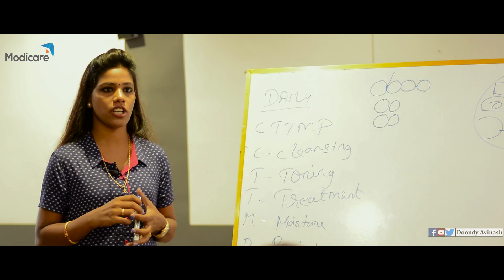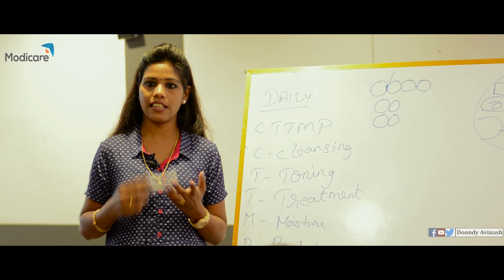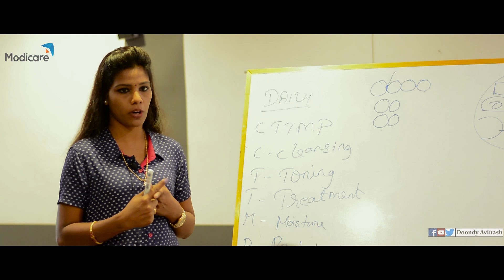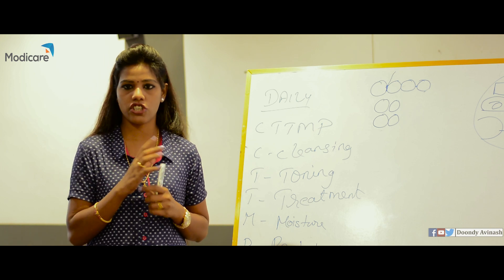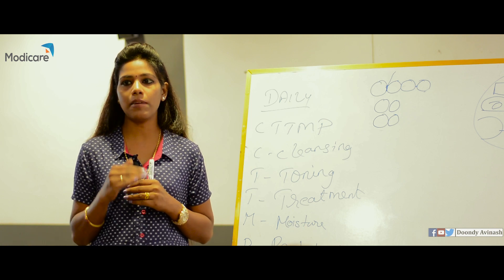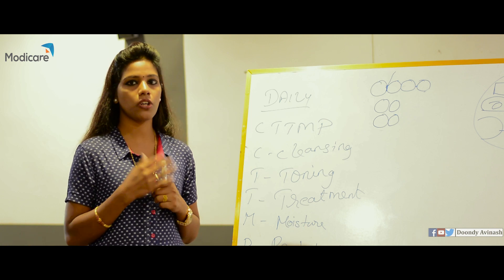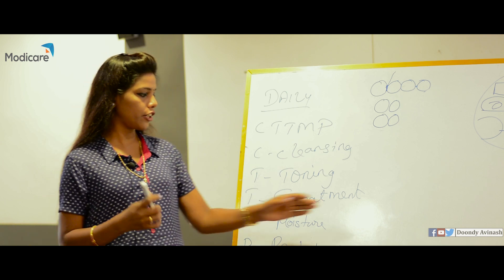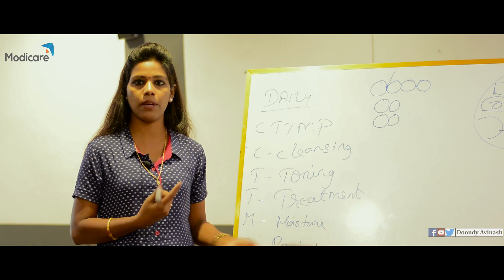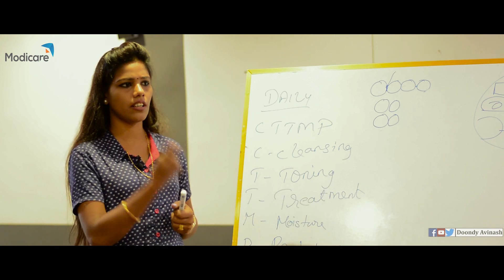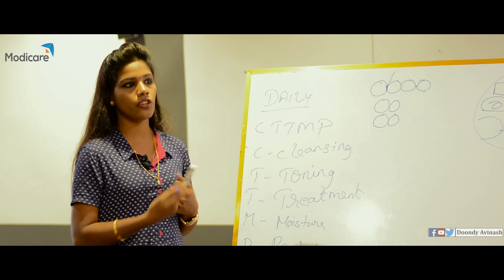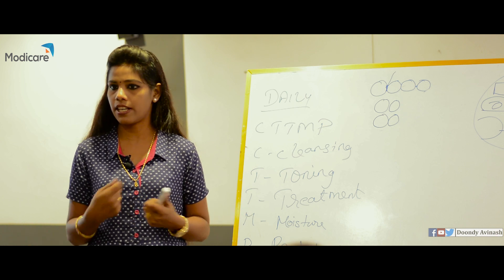Next is treatment and moisturizing. According to your skin problem, you have to treat it properly. Each and every skin needs some moisturizing content, and luckily in Shloka products, all products have inbuilt moisturizing content because of the natural ingredients. For normal skin you can use whitening cream; for oily skin, fairness gel; for dry skin, rejuvenating day cream — it depends on your skin type and skin problem.